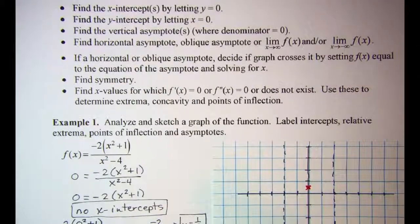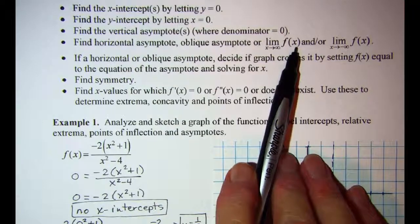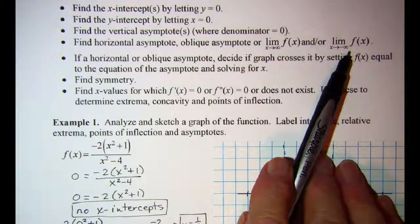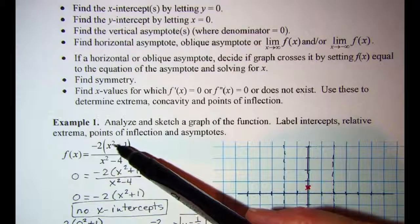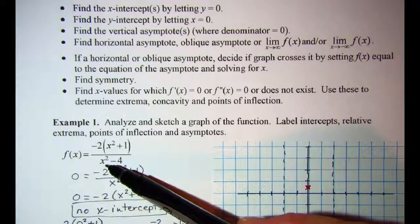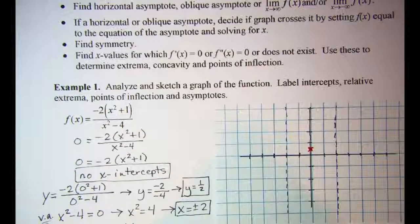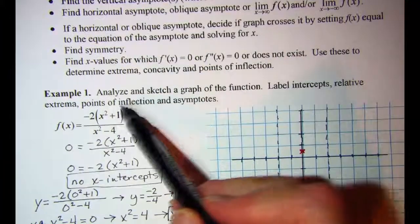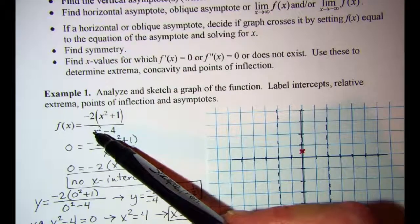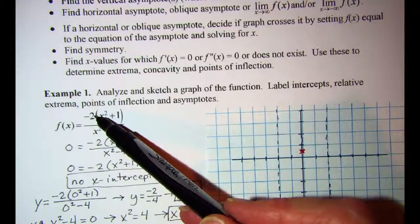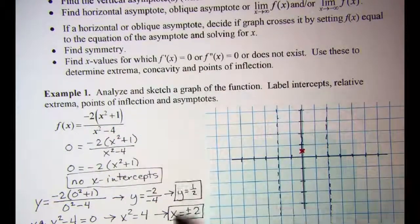Our next step is to find the horizontal asymptote, oblique asymptote, or the limit at positive and negative infinity. This is a rational function, and since the degree of the numerator equals the degree of the denominator, we have a horizontal asymptote at the ratio of the leading coefficients. The leading coefficient in the numerator is negative two and in the denominator is one, so our horizontal asymptote is at y equals negative two.